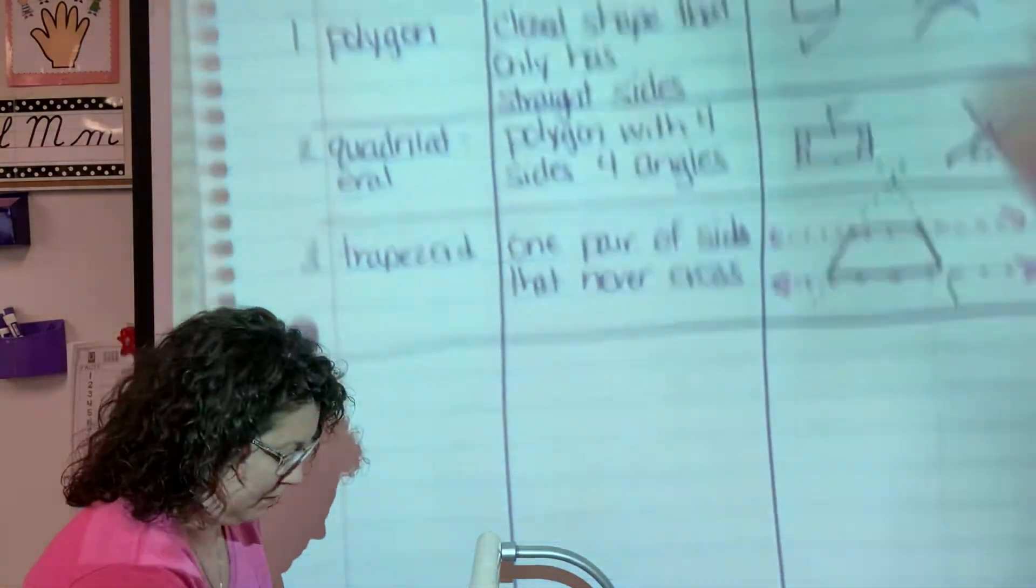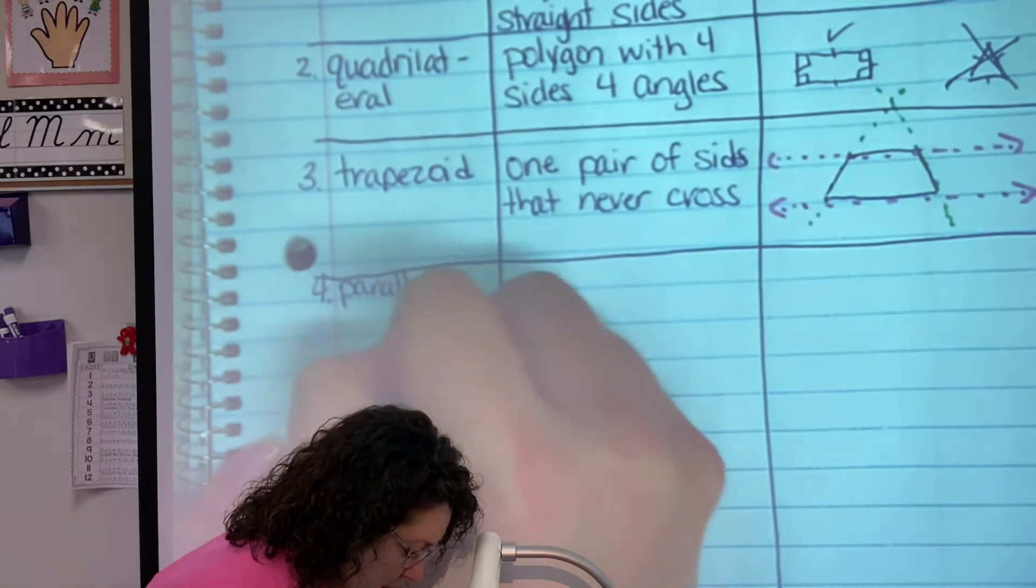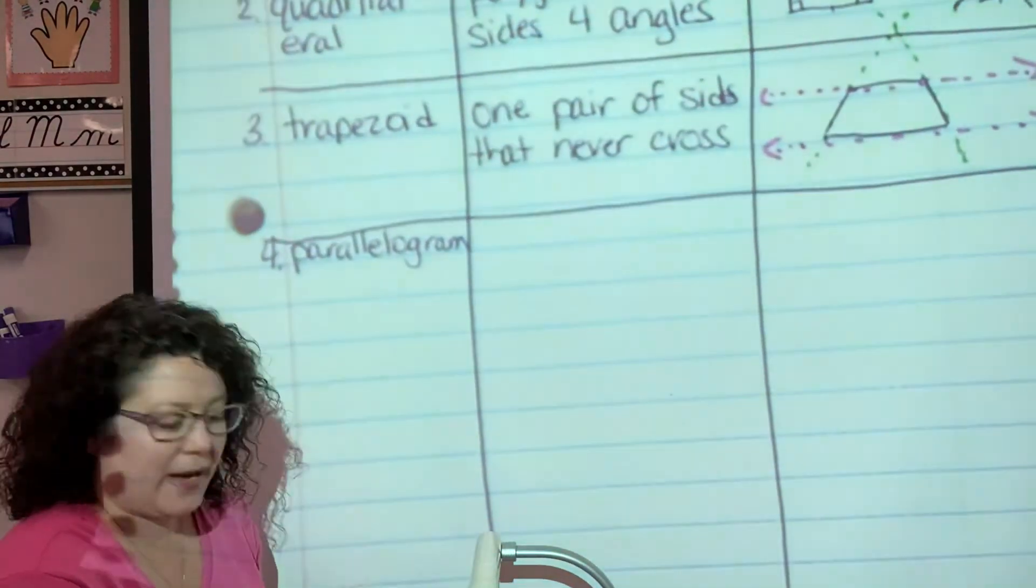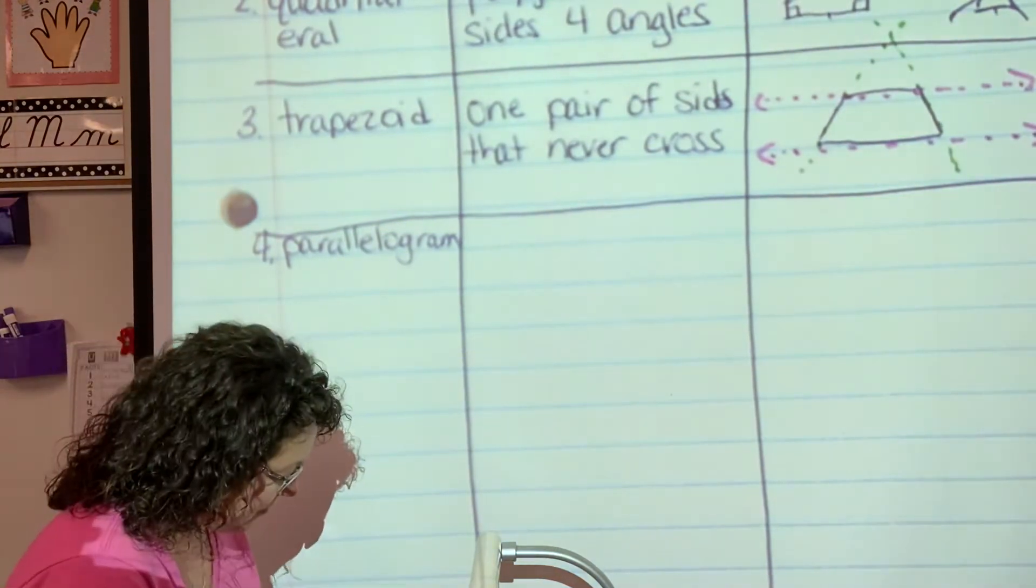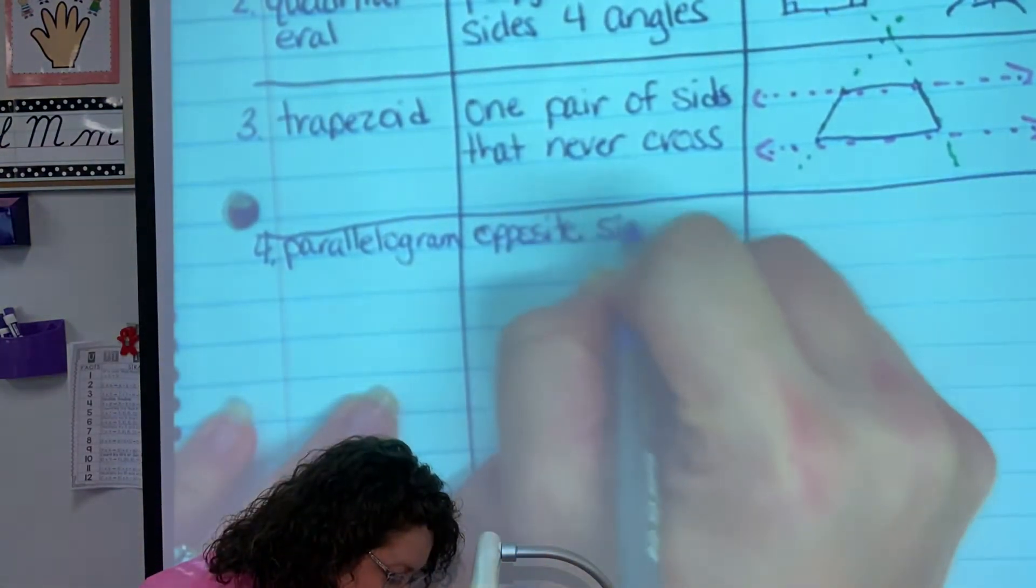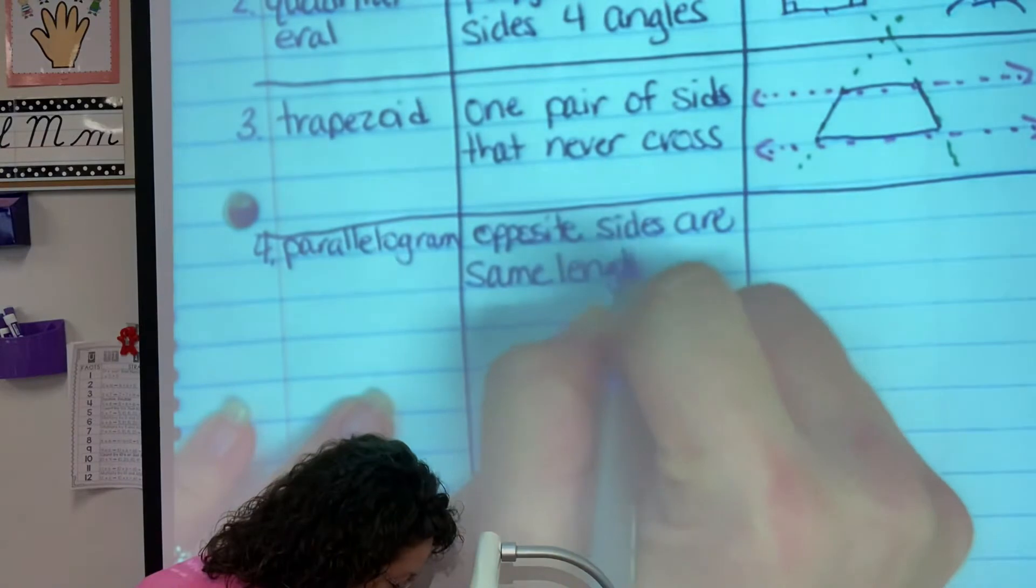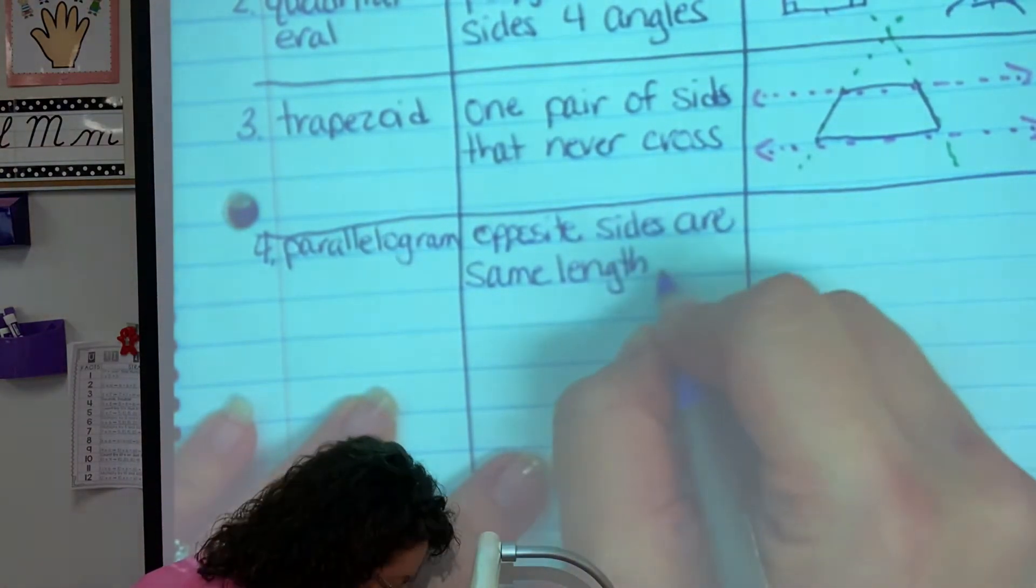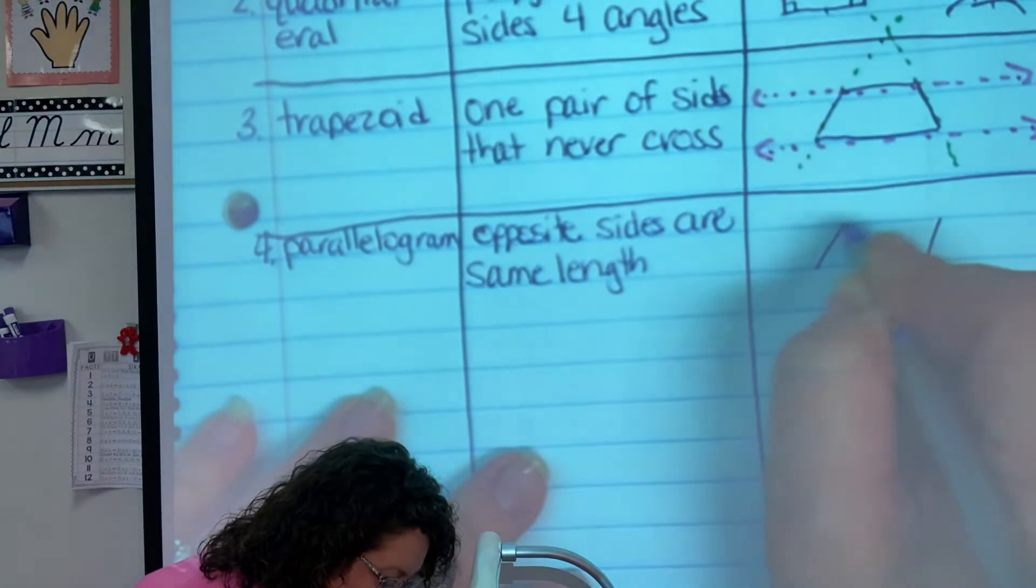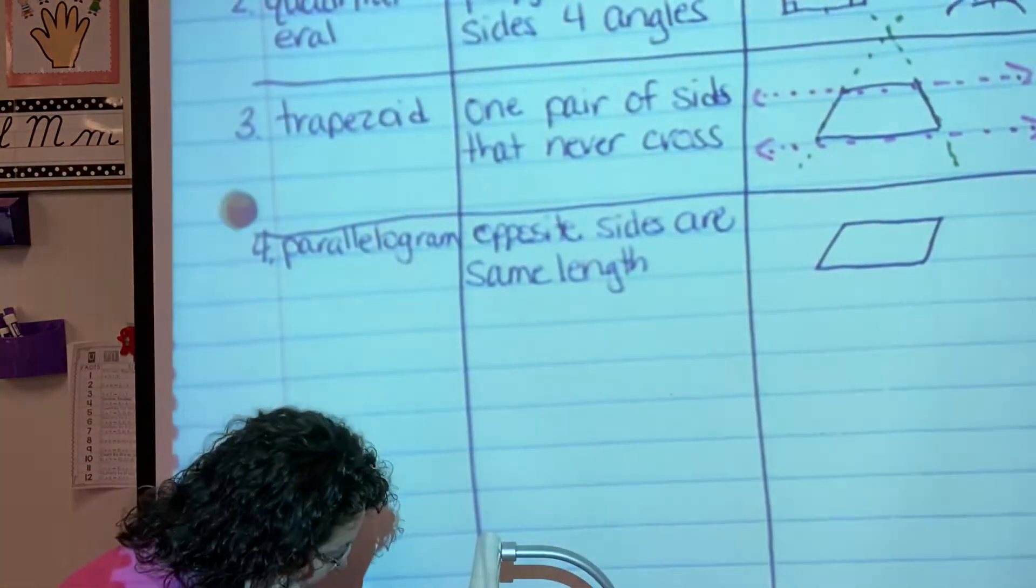Number four. Parallelogram. I like that word. Parallelogram, and you might need to go on underneath it. Parallelogram. And a parallelogram has opposite sides are same length. All right, so it's almost like a rectangle that got kind of pushed over a little bit, because these two sides are the same and these two sides are the same. Parallelogram.